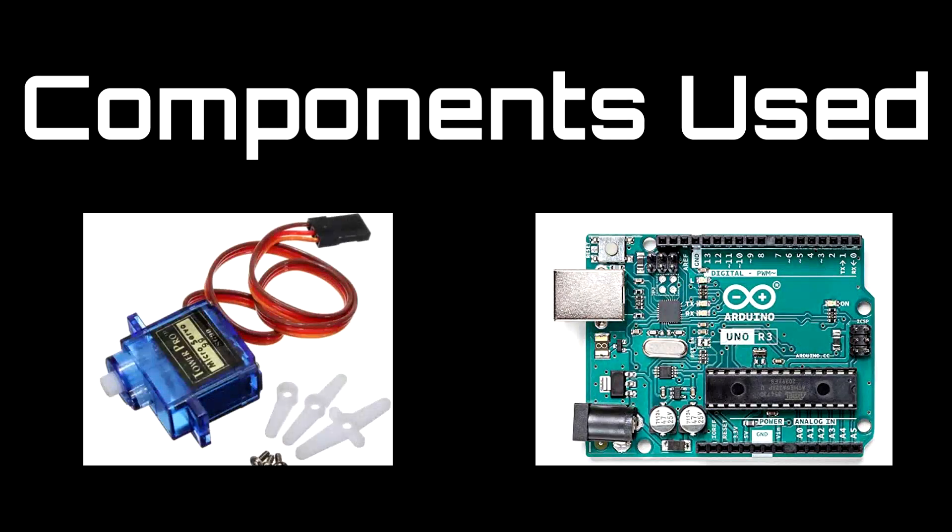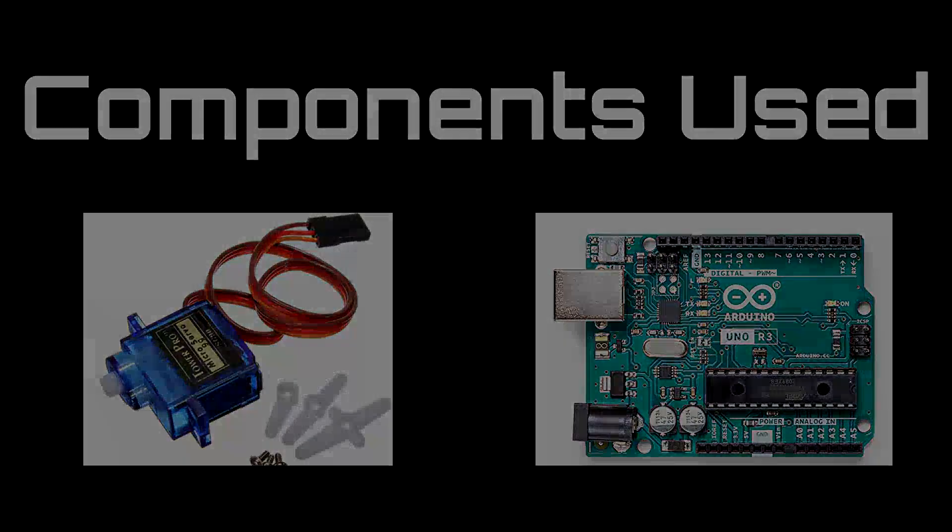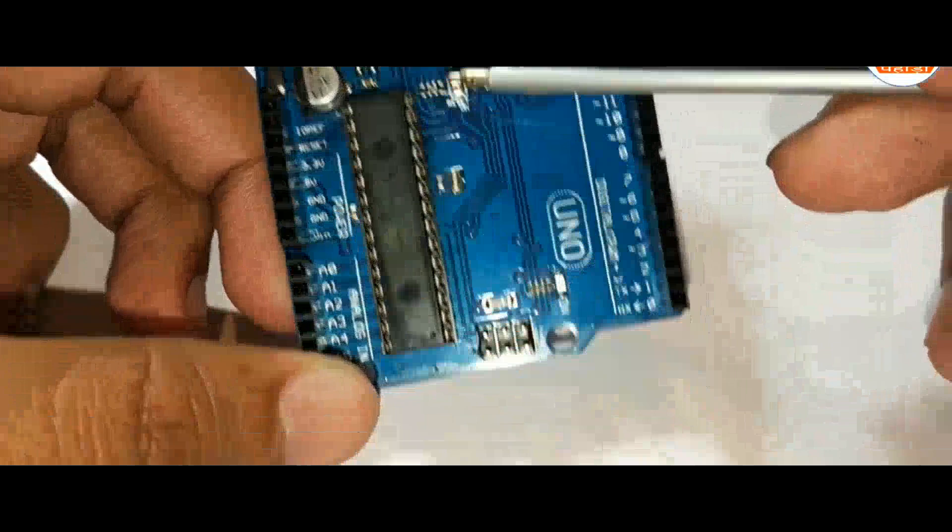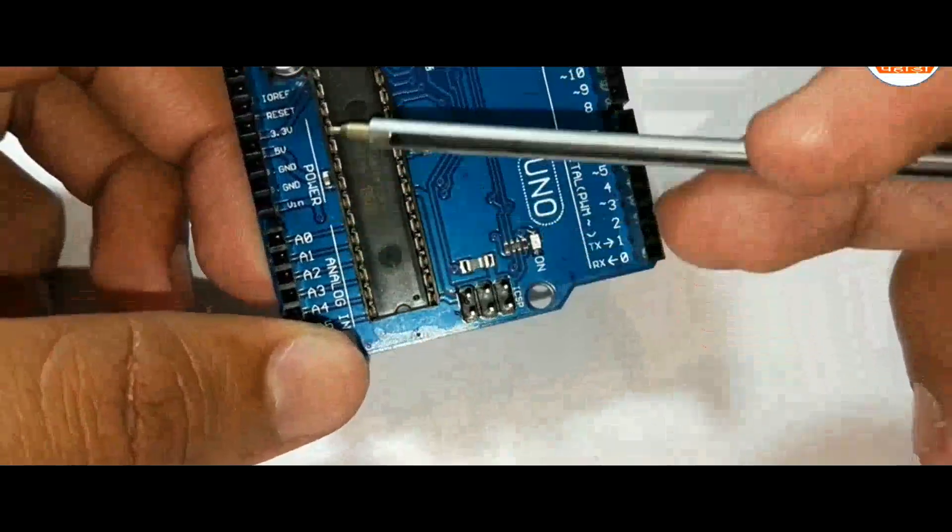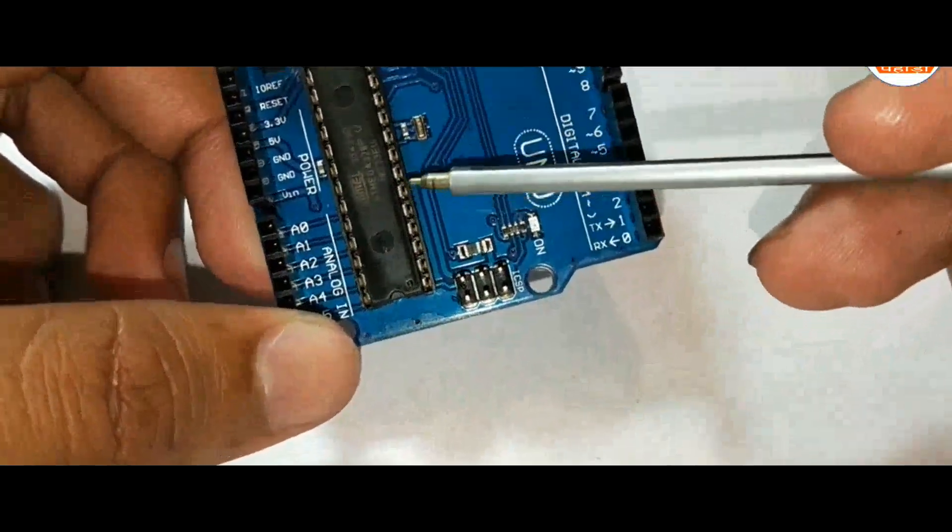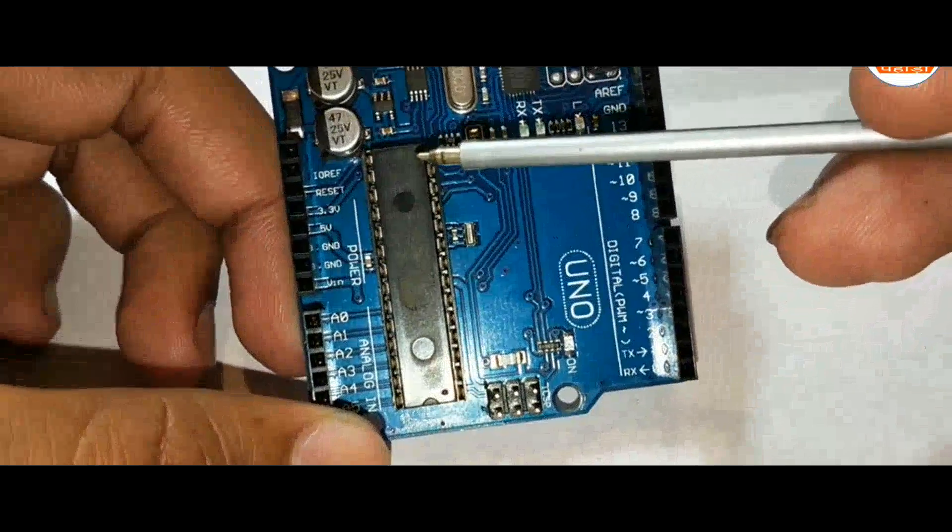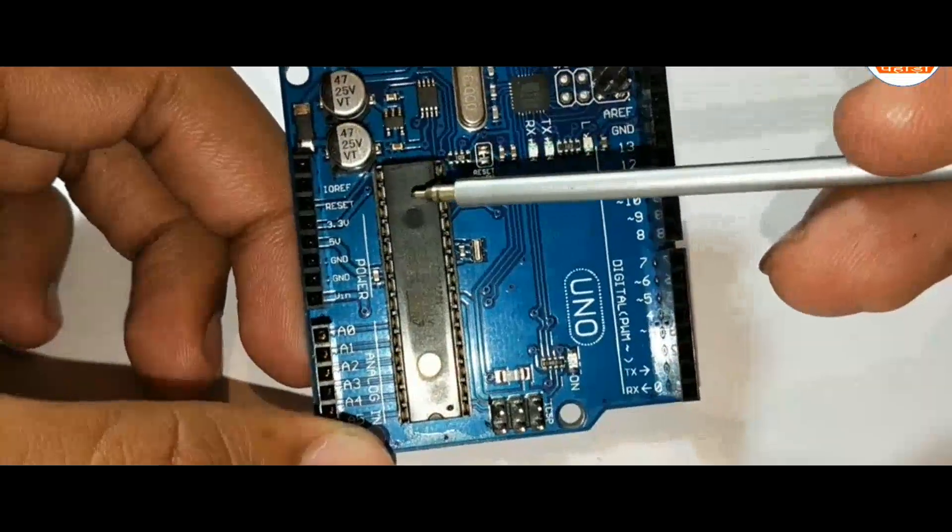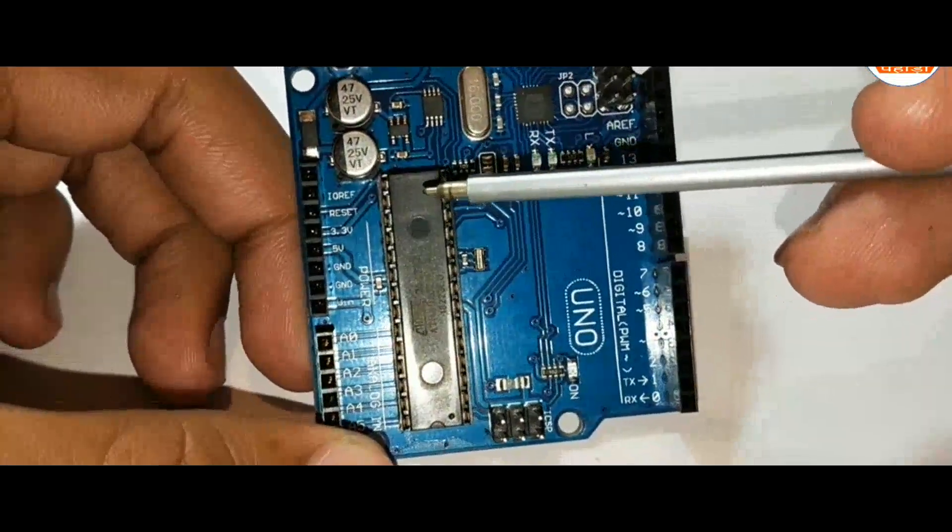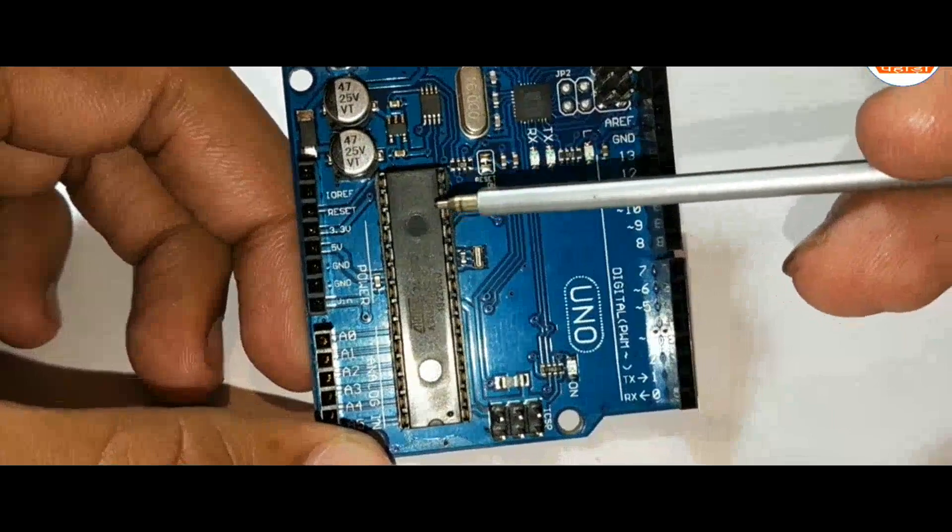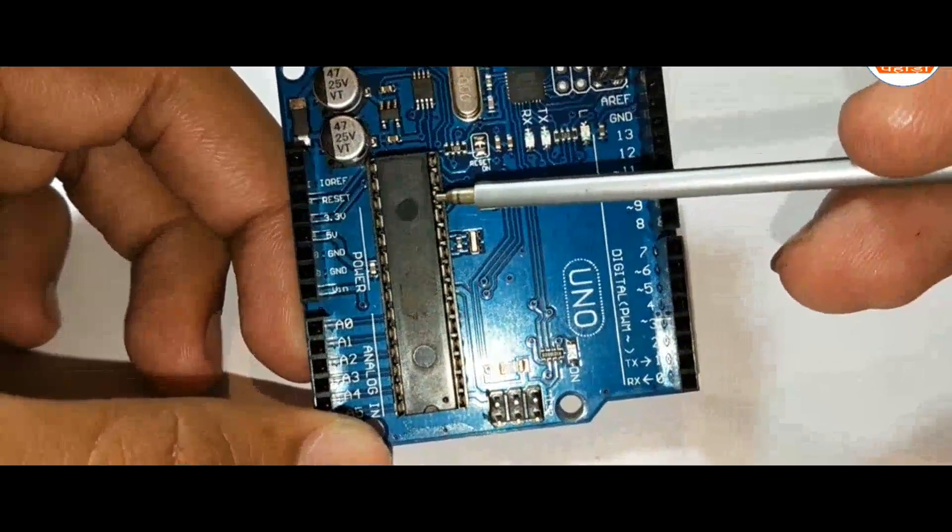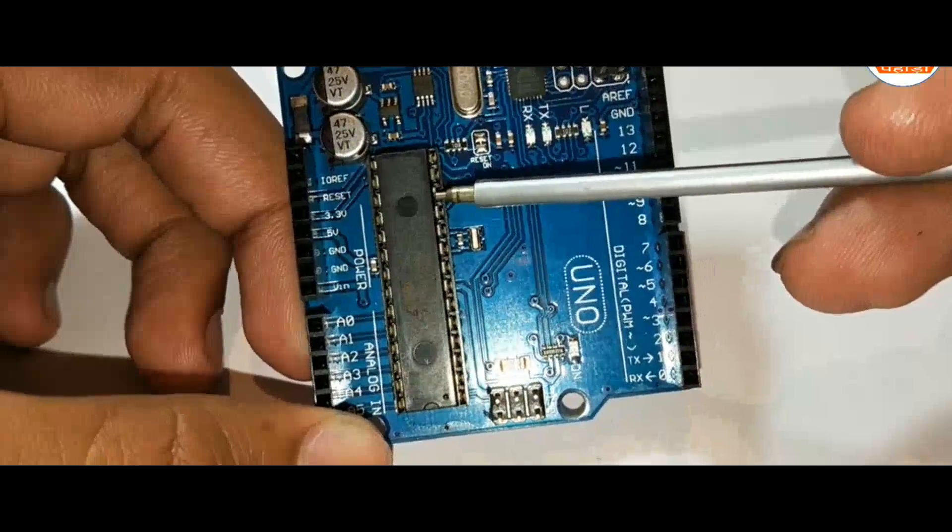Components Used. The model has two major components: servo motors and Arduino Uno. The Arduino Uno is an open-source microcontroller board. The board is equipped with sets of digital and analog input/output pins that may be interfaced to various expansion boards and other circuits.